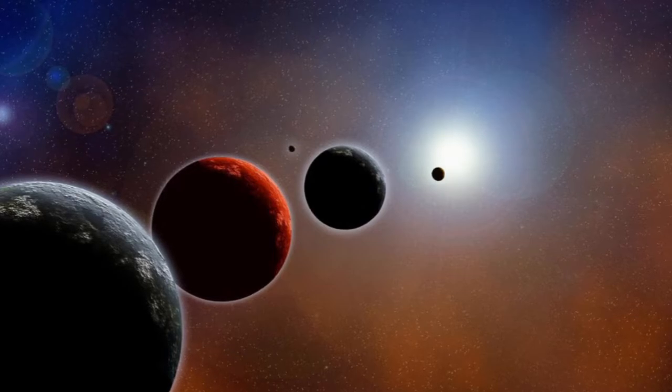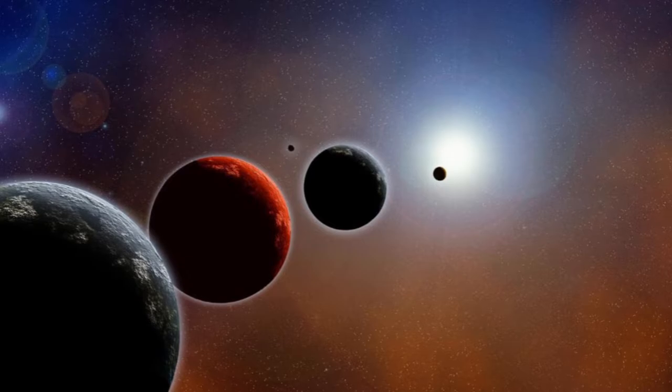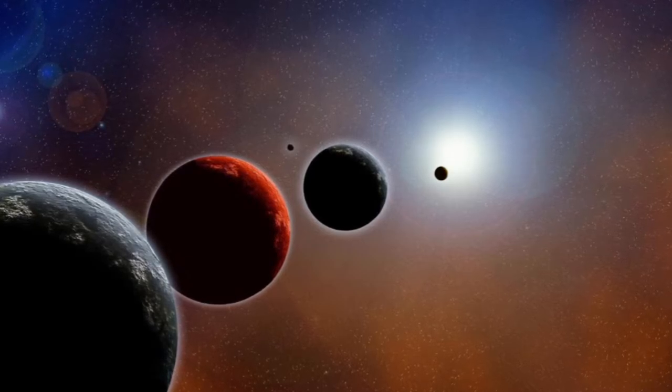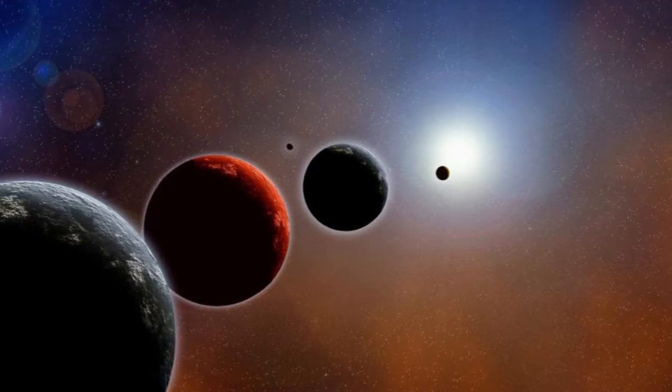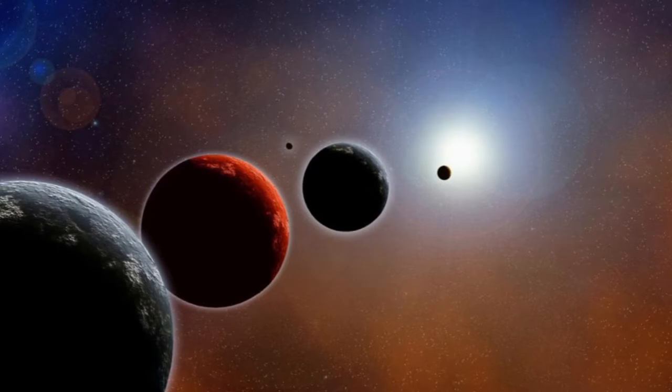Kepler's field of view was 115 square degrees. It observed half a million stars and discovered 2,392 exoplanets, with a similar number of candidate planets awaiting confirmation. Although the telescope detected some terrestrial planets, none around sun-like stars were potential Earth twins.